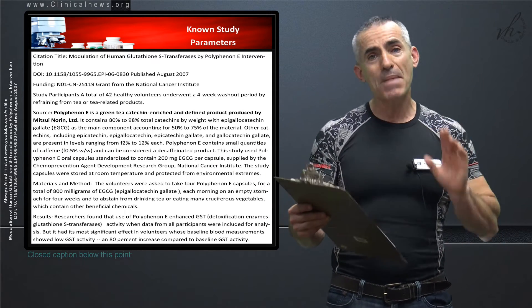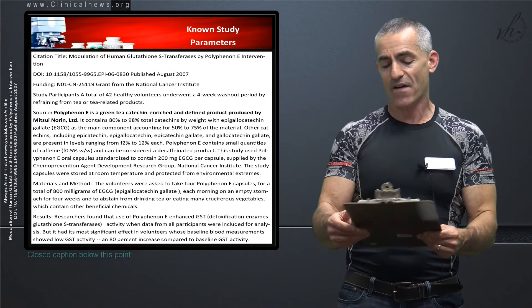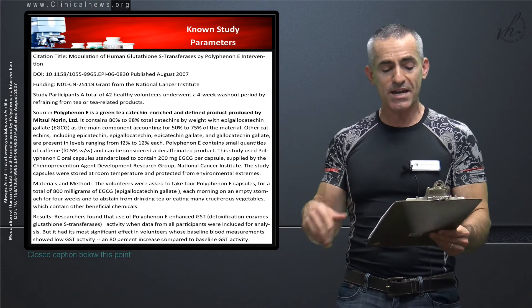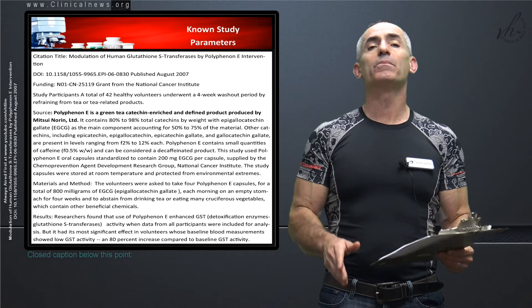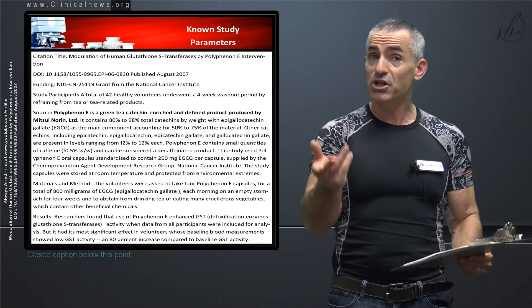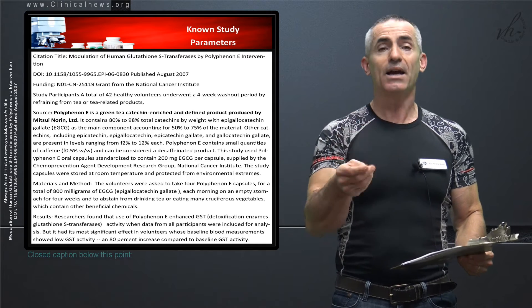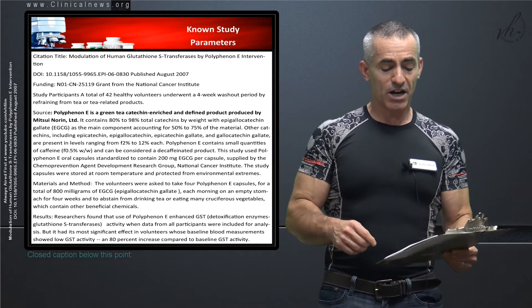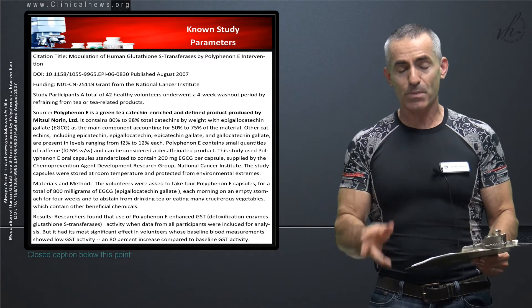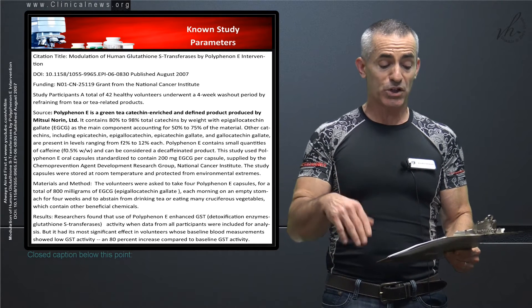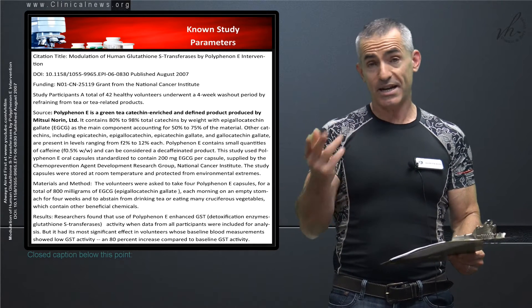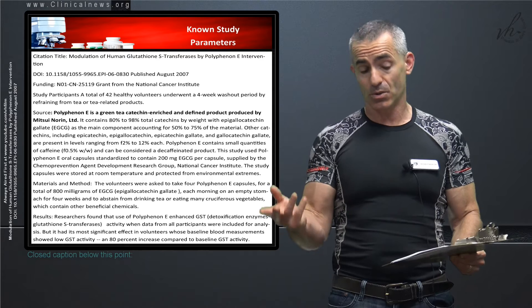Materials and methods. The volunteers were asked to take four of these polyphenol E capsules for a total of 800 milligrams of EGCG. EGCG being your epigallocatechin gallate. Each morning on empty stomach for four weeks and asked to abstain from drinking tea or eating many cruciferous vegetables, which can contain other beneficial chemicals because they don't want to skew the study.